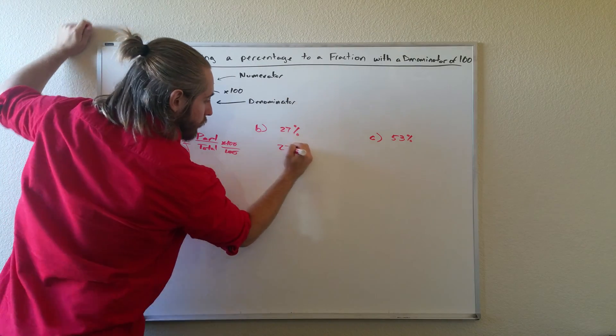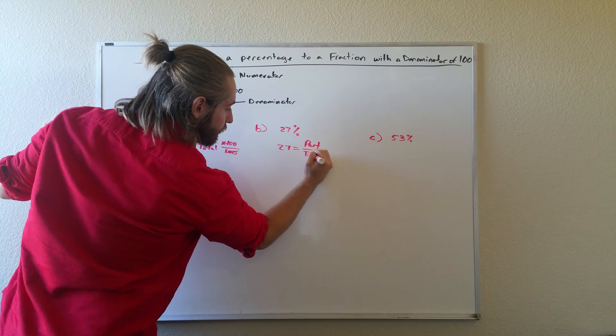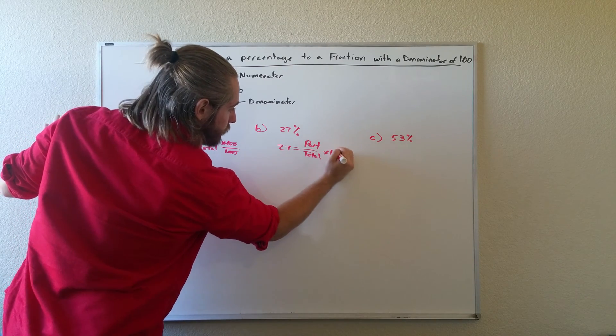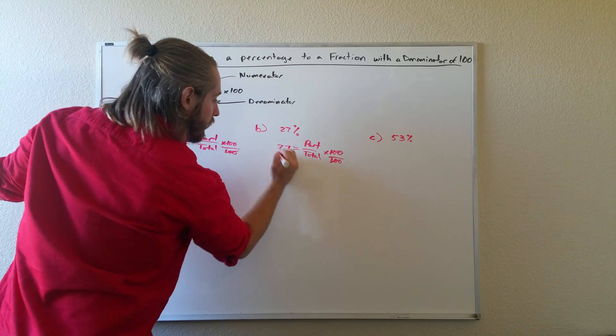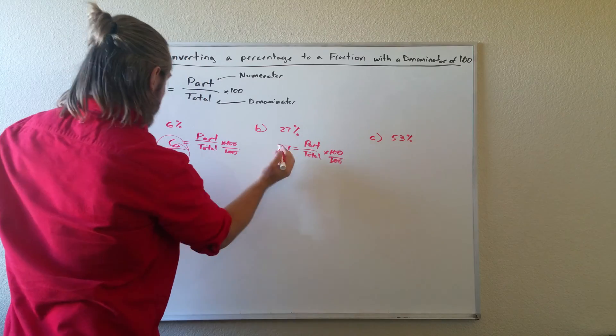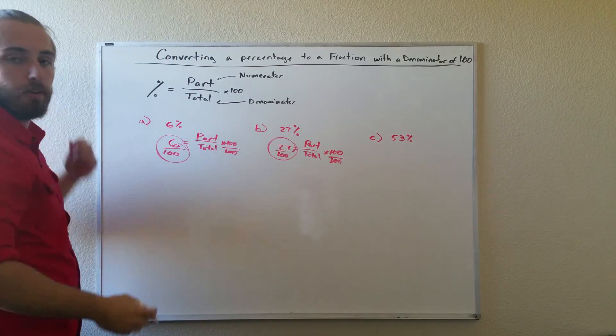We'll do the same thing over here. 27 equals part over total times 100. We'll divide both sides by 100, and again we have our answer: 27 over 100, since it wants the denominator to be 100.